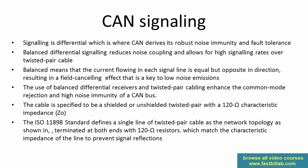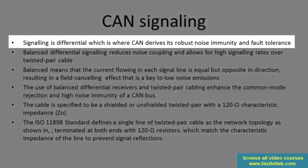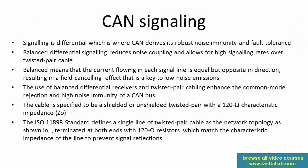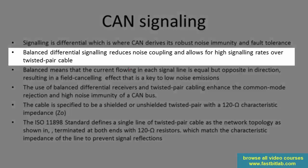Let me quickly summarize the CAN signaling. These points I have taken from Texas Instruments documentation. The signaling is differential, which is where CAN derives its robust noise immunity and fault tolerance. Balanced differential signaling reduces noise coupling and allows for high signaling rates over twisted pair cable.